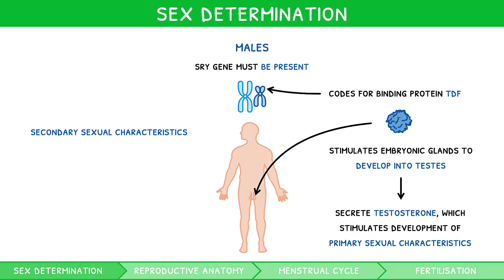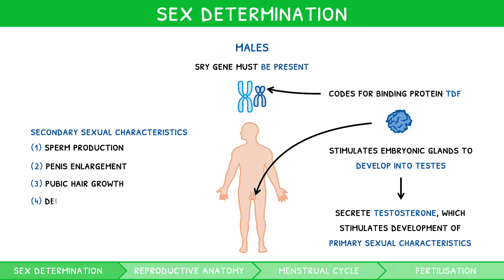These include sperm production, penis enlargement, pubic hair growth, and deepening of voice.